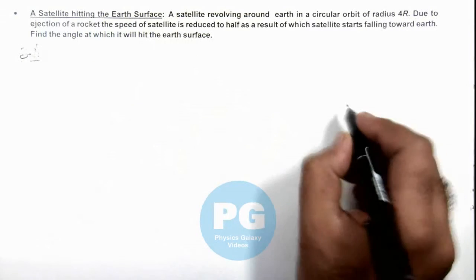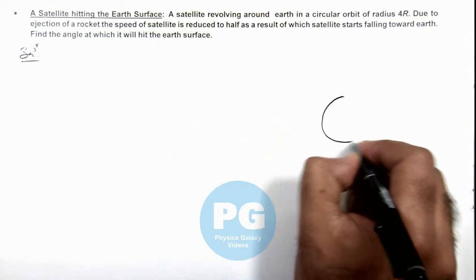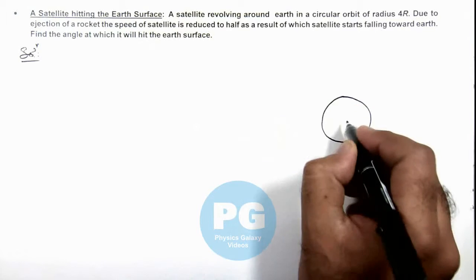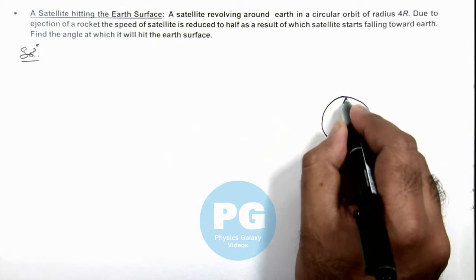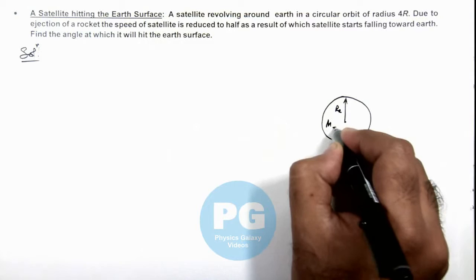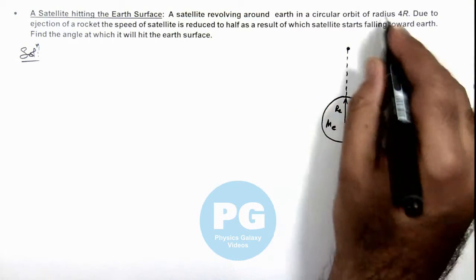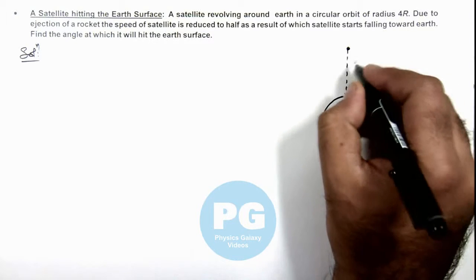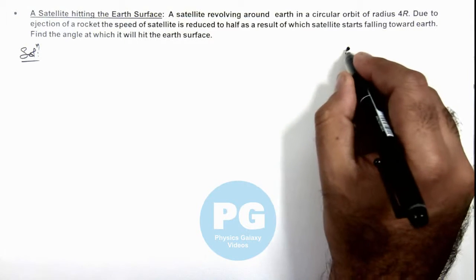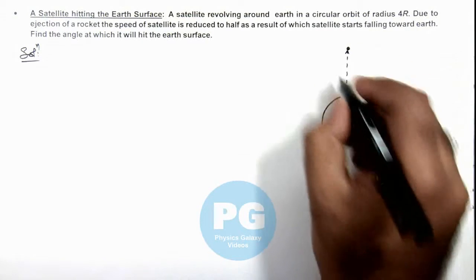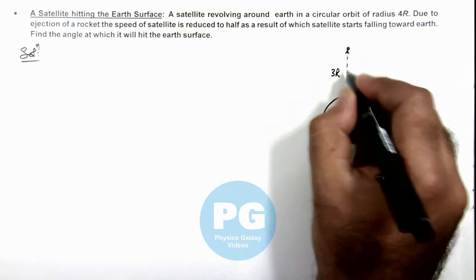This is an interesting case. If this is Earth, we consider it of radius RE and mass ME. A satellite is revolving around it in an orbit of radius 4R, so its height above the Earth surface can be written as 3RE.